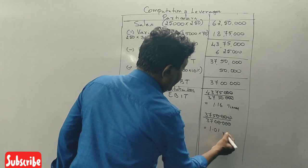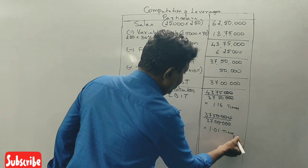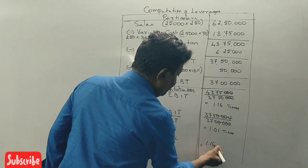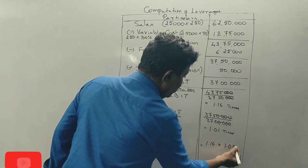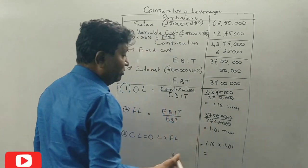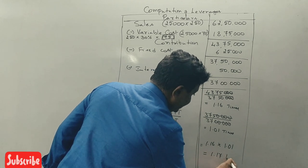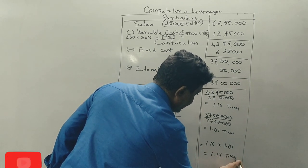Financial leverage is EBIT divided by EBT: 1.01 times. Combined leverage is 1.16 into 1.01, which equals 1.17 times.